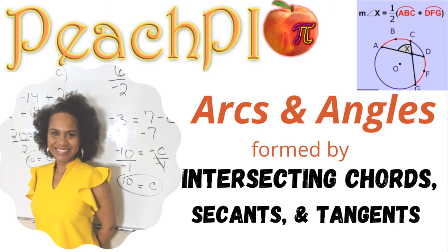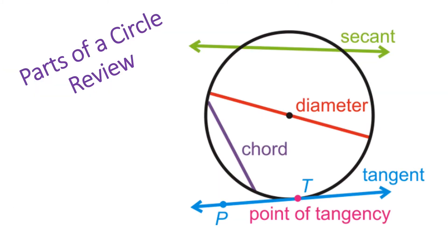Since we're going to be discussing the secant, chord, and tangent of a circle, let's review what they are. A secant is a line that intersects the circle at exactly two points. A chord is a segment with its endpoints on the circle. The tangent intersects the circle at exactly one point, called the point of tangency.